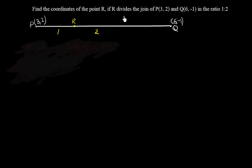If R divides the join of P(3,2) and Q(6,-1) in the ratio 1:2. So here I have taken the points P, that is 3 comma 2, and Q(6,-1).